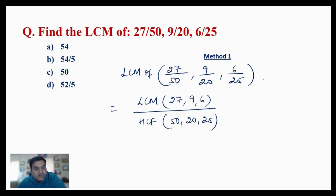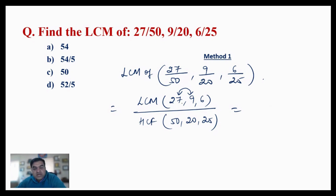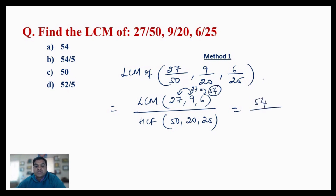Using the shortcut trick, we look at the two biggest numbers: 27 and 9. Since 9 × 3 = 27, the LCM of 27 and 9 is 27. Now between 6 and 27, since 6 cannot divide 27 completely, we multiply 27 by 2 to get 54, and 54 is divisible by 6. So 54 is the LCM of these three numerators.